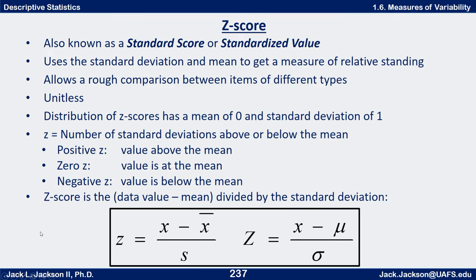A z-score is also known as a standard score or standardized value. It uses the standard deviation and the mean to get a measure of relative standing. Because of this, it allows us to give a rough comparison between items of different types. It's unitless, so the units cancel out in the computation.